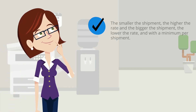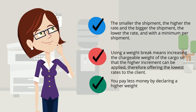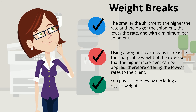Sometimes you can save money by declaring a higher weight — this is called a weight break. The smaller the shipment, the higher the rate; the bigger the shipment, the lower the rate. Using a weight break means increasing the chargeable weight of the cargo so that a higher weight increment with lower rates can be applied. Always be aware of the weight break when looking at a rate sheet — if your chargeable weight falls between two weights, check to see if you can save money by declaring the higher weight.